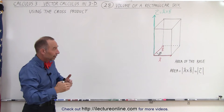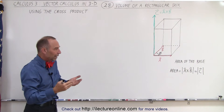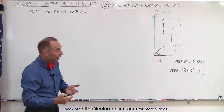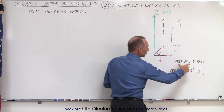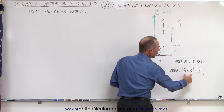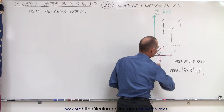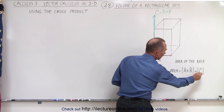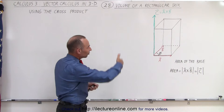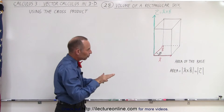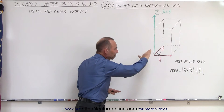Using the equation for the area of a parallelogram — which is equal to the area of a rectangle or square — the area of the base would be equal to the magnitude of the cross product of those two vectors. Let's call that vector C, equal to A cross B, which would be perpendicular to the plane where A and B are.